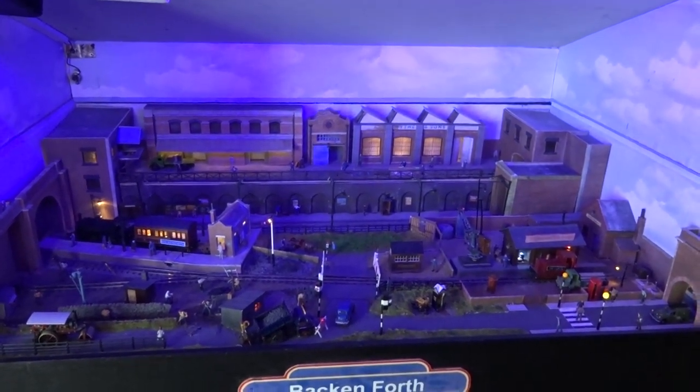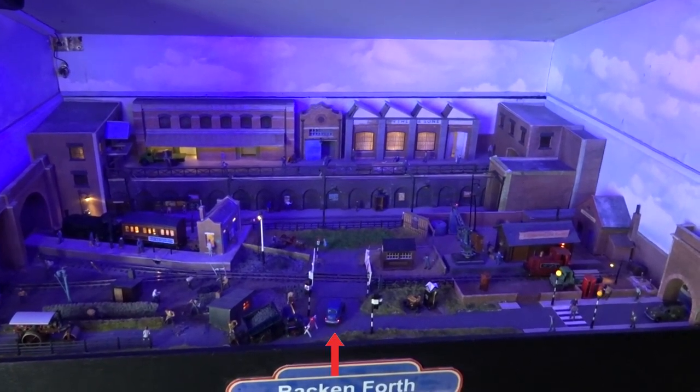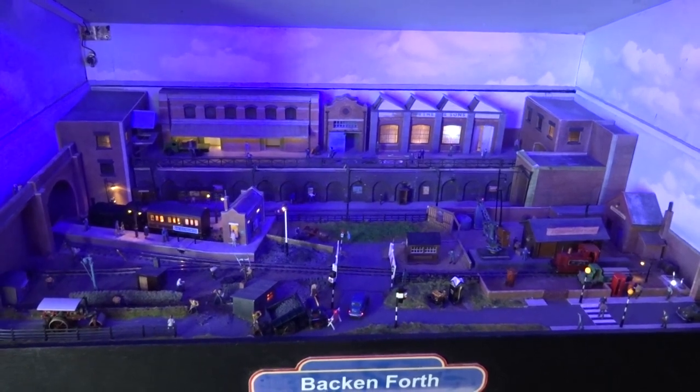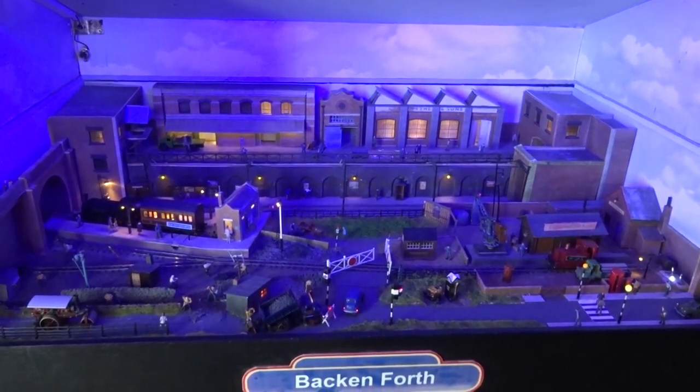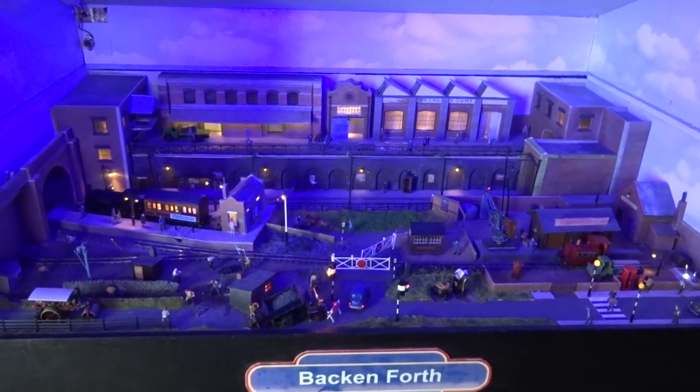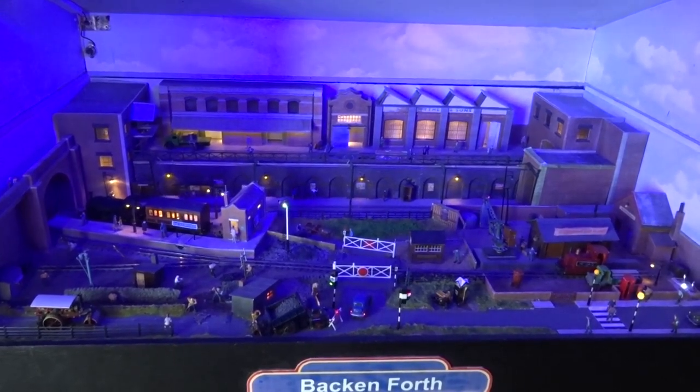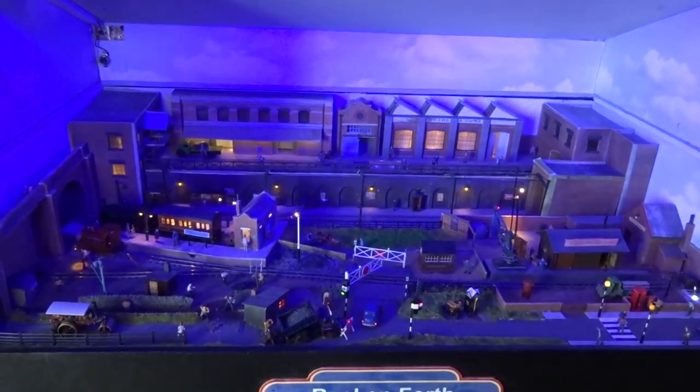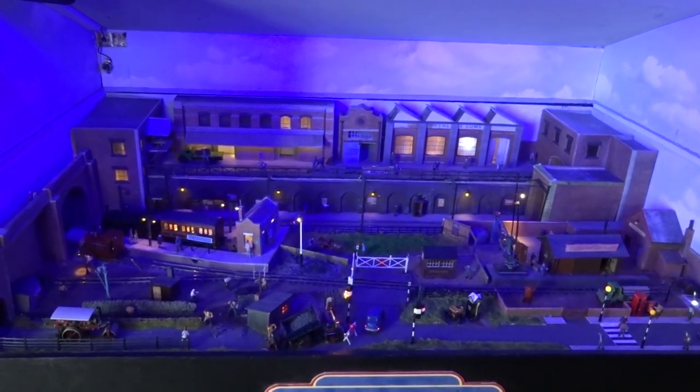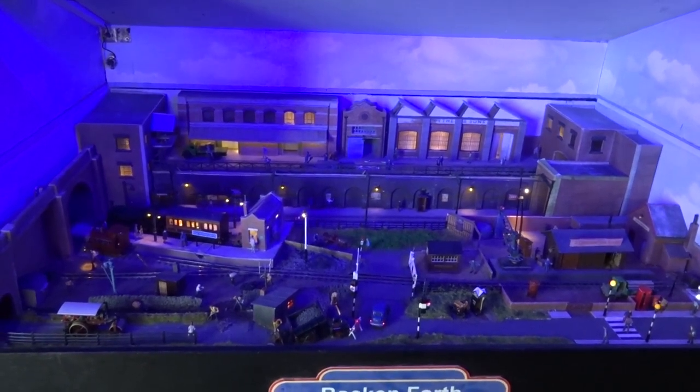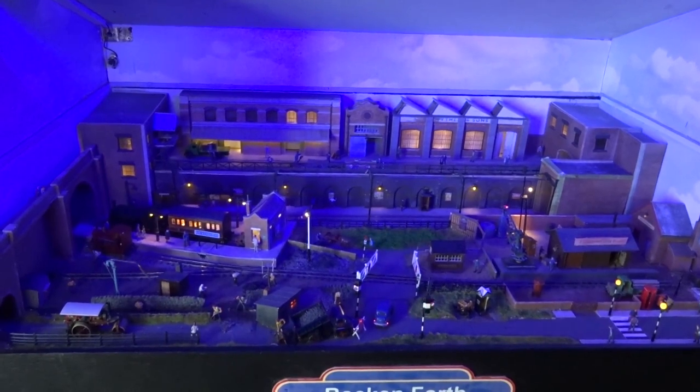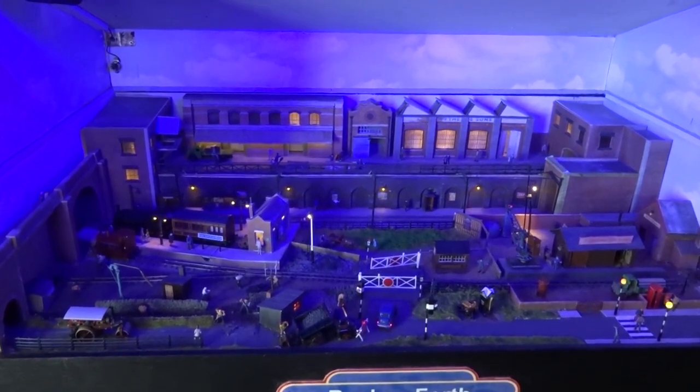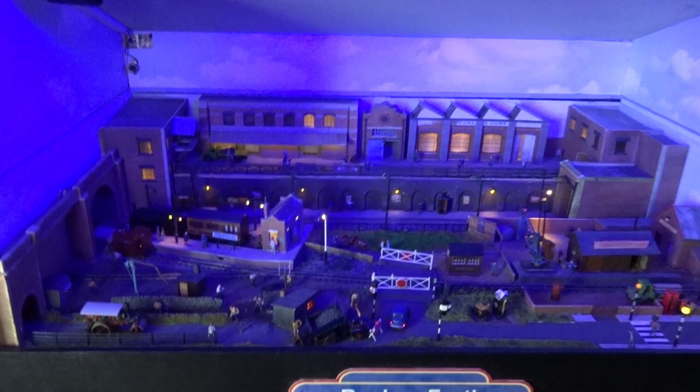And then every so often we're going to have bad weather and thunder and lightning. Let's have a look. It's just turning to night, you'll see the car lights come on. Station lights come on. The wall lights have just come on. And soon we'll have lightning followed by thunder. And as always, after bad weather, we make the sun come out, at least in our layout we do.